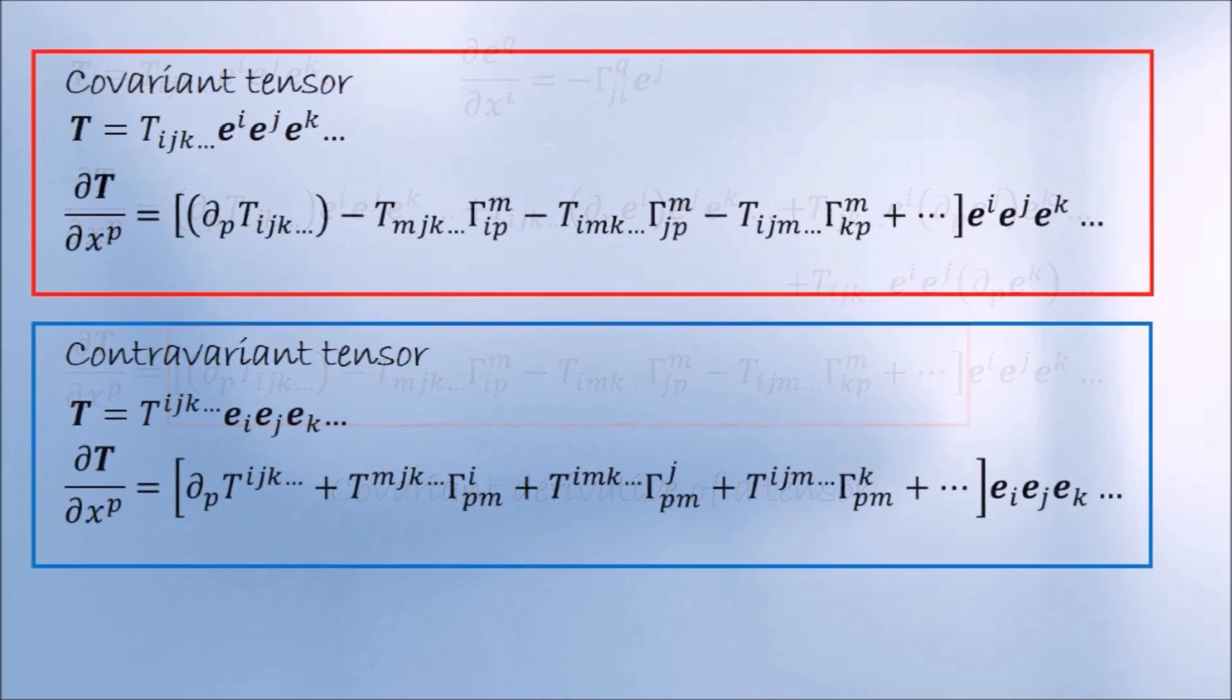So, if we have a tensor with dual bases, its derivative would be... So, finally, as an exercise, you can work out the covariant derivative of a mixed tensor.